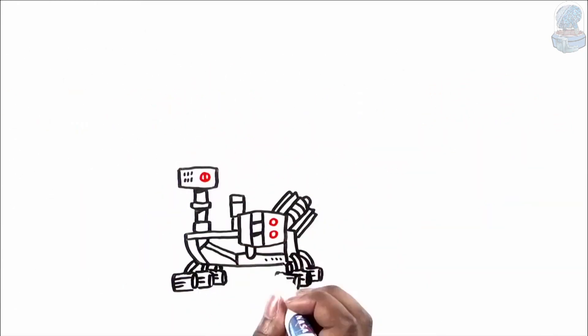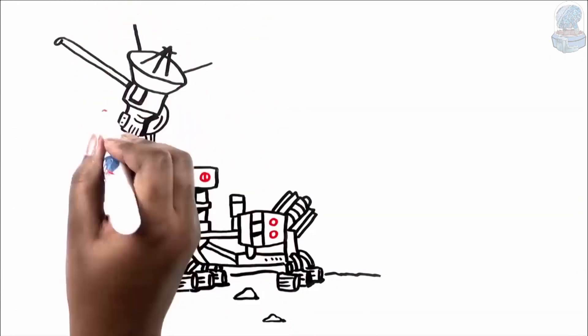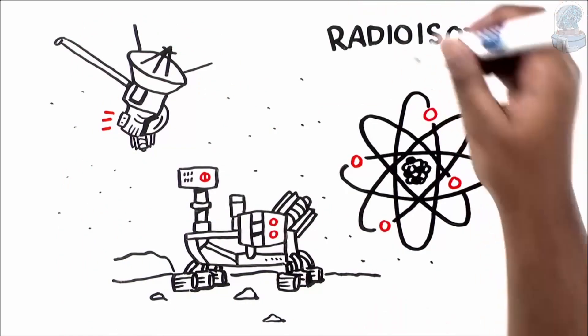That's why NASA's Curiosity rover on Mars and other NASA spacecraft that explore the solar system use something called radioisotope power.